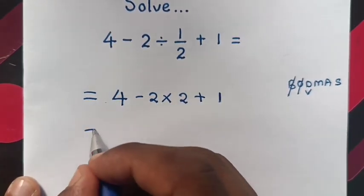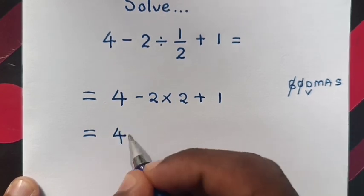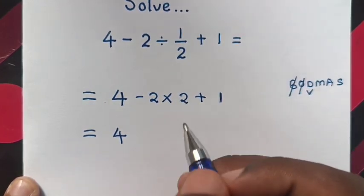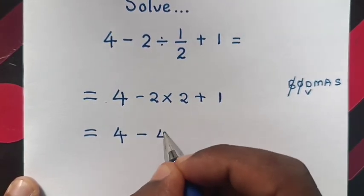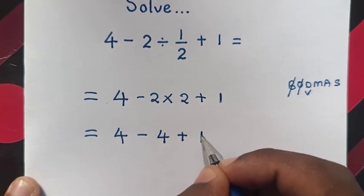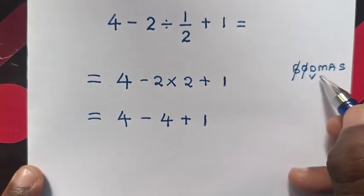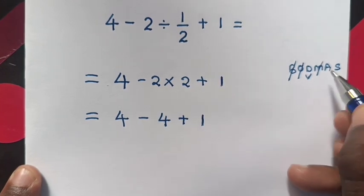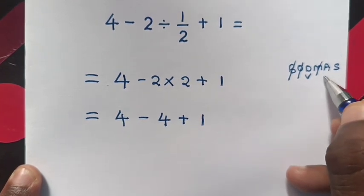So here it will be equal to 4. Negative 2 times 2, it will be negative 4 plus 1. Then from our problem, there is no multiplication. So next step, we will do addition.